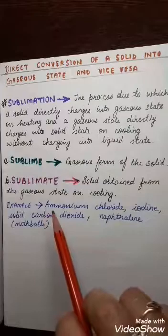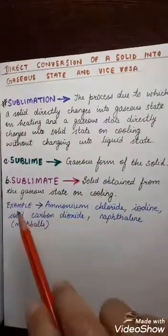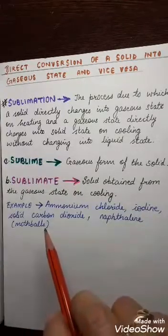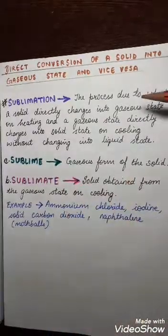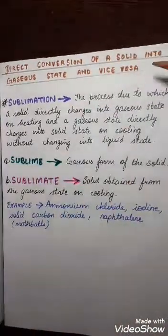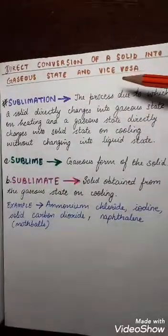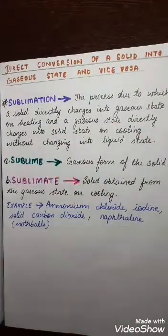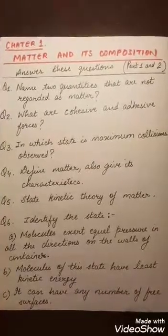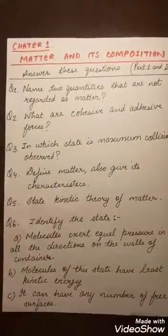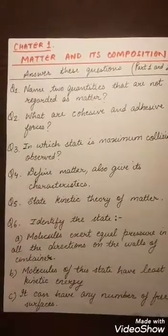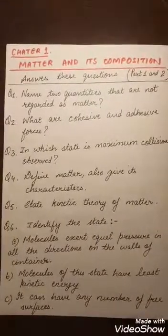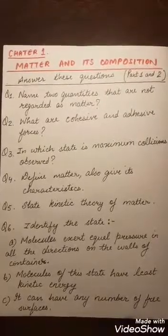Examples of solids that sublime are ammonium chloride, iodine, solid carbon dioxide, and naphthalene (also called moth balls). So sublimation is a direct conversion of a solid into a gaseous state and vice versa, without changing into the liquid state. I hope the topics covered in parts 1 and 2 from chapter 1 are now clear. Please do the questions provided. Thank you.